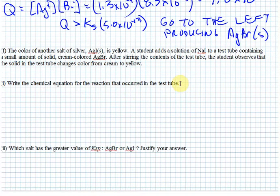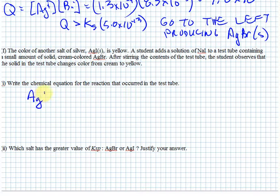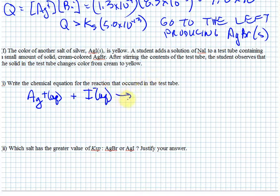Wrapping up with another part of the problem. A student adds a solution of sodium iodide to a test tube containing a small amount of solid cream-colored silver bromide. After stirring, the student observes the solid changes color from cream to yellow. The reaction that occurs: silver ions dissolved from the silver bromide react with the added iodide ions to form silver iodide — AgI — the yellowish substance.